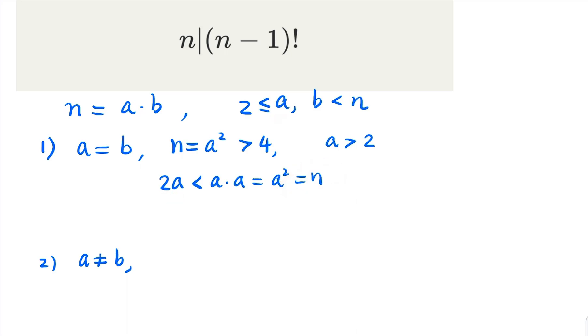So they must both appear in the product of (n-1) factorial. So (n-1) factorial has to contain, because that is the product from 1, 2, up to n-1. So in this sequence of numbers, it contains a and contains 2a. So that means a squared must divide (n-1) factorial. Of course, what is a squared? That's n.